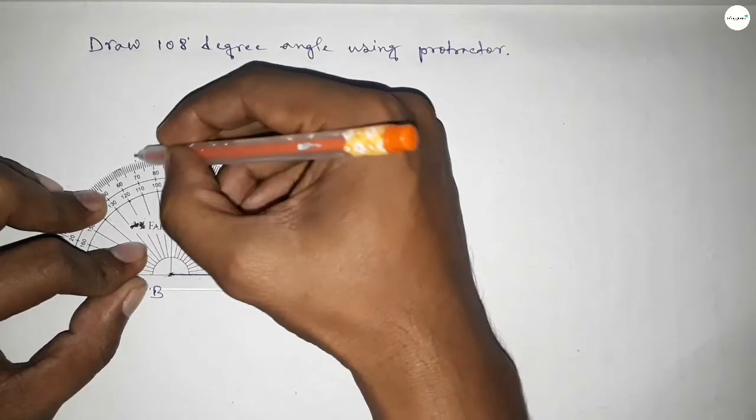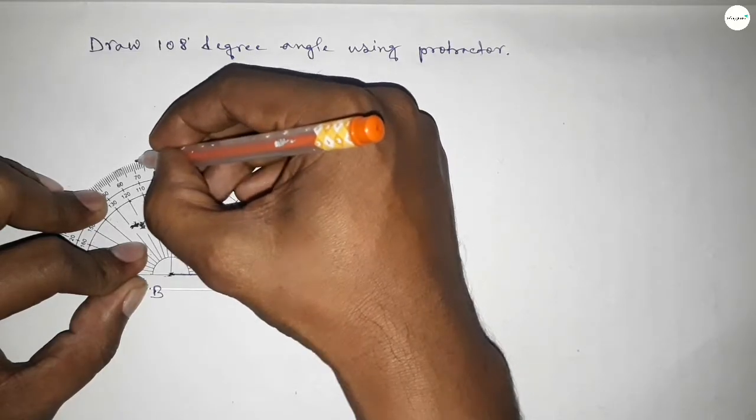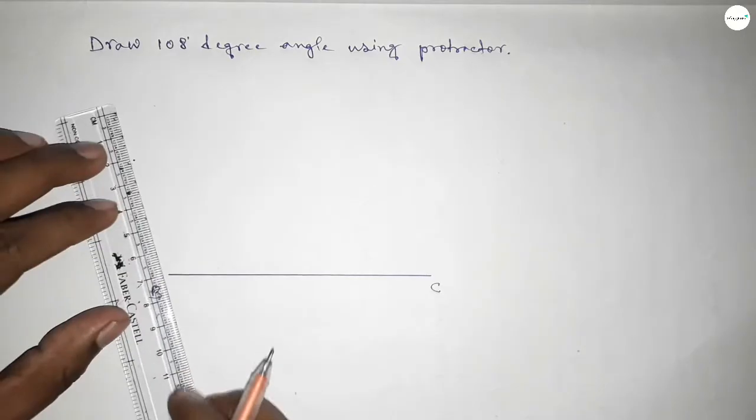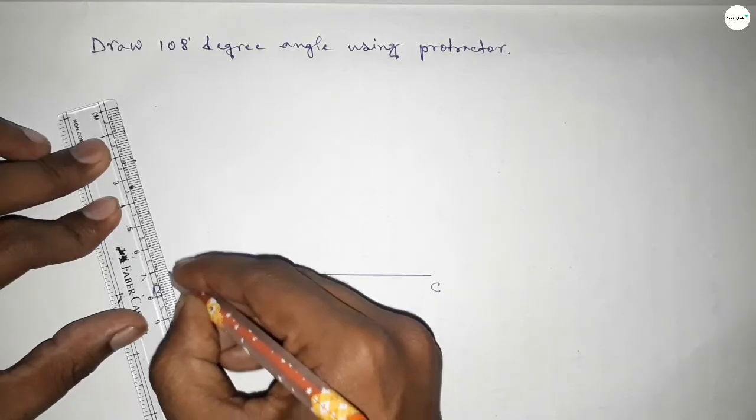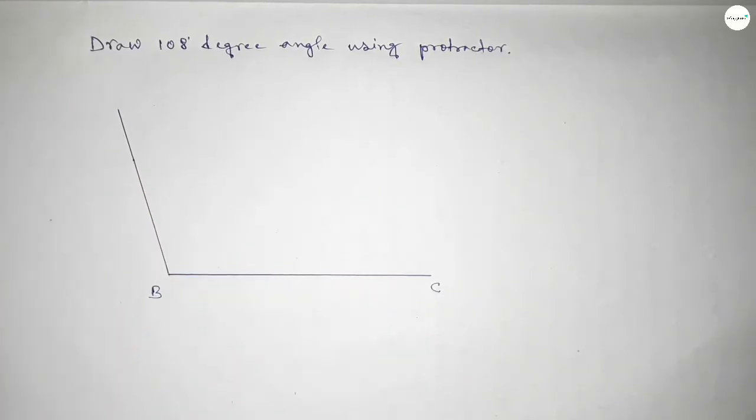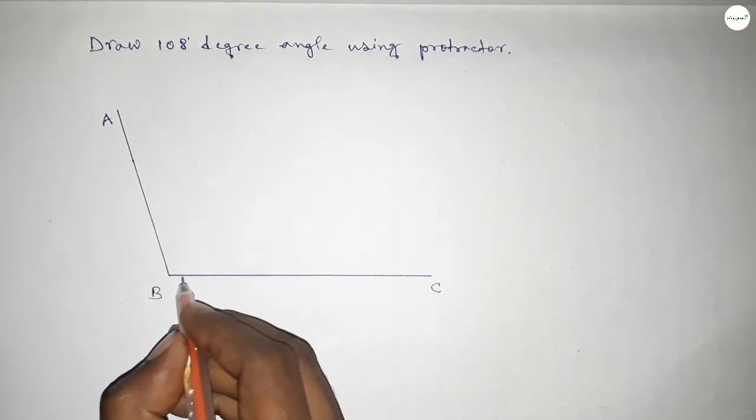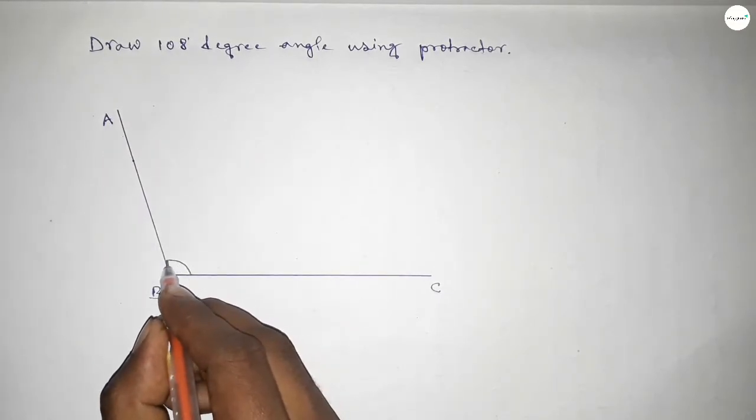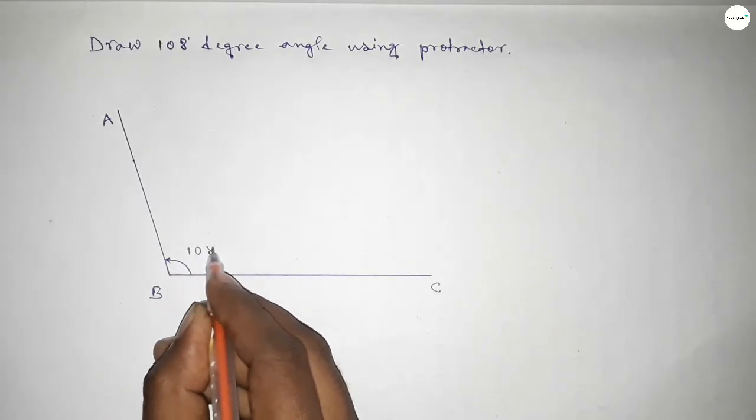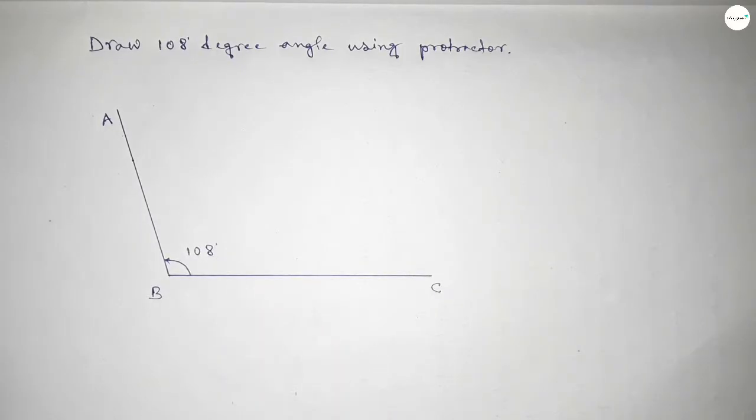Now joining this side to get the 108 degree angle and marking point A here. So angle ABC is 108 degrees. Therefore, angle ABC equals 108 degrees.